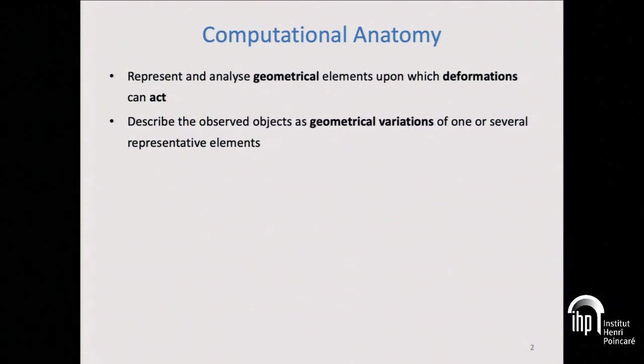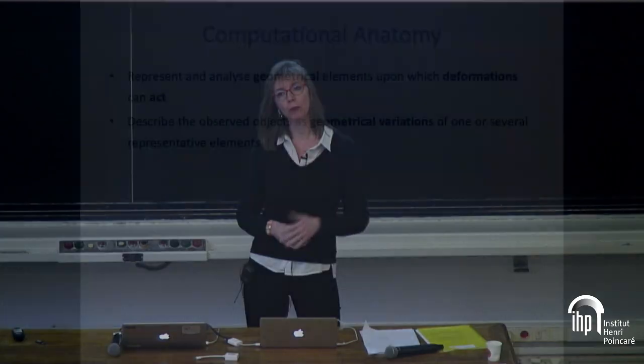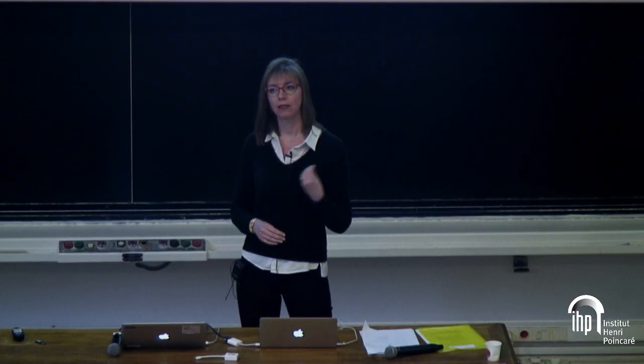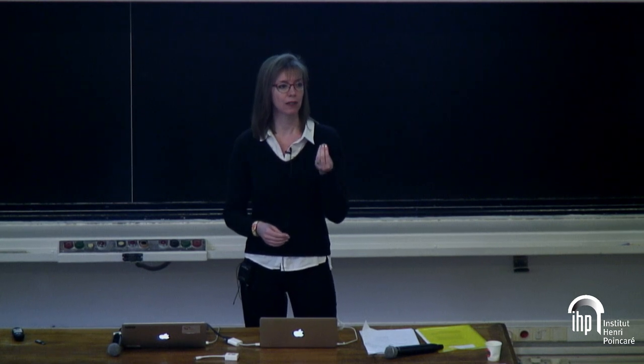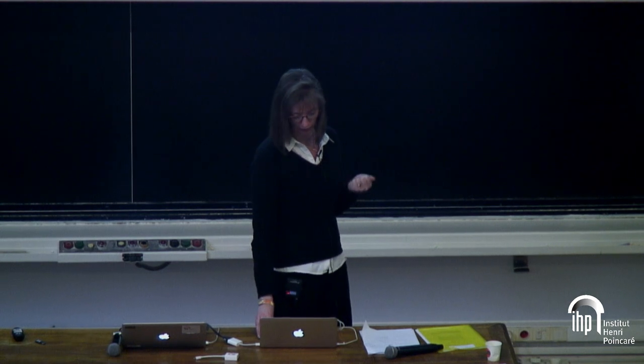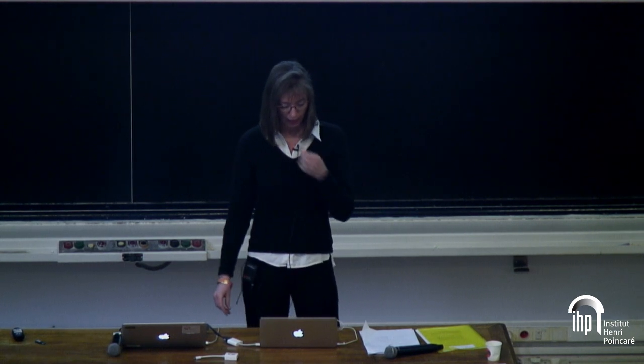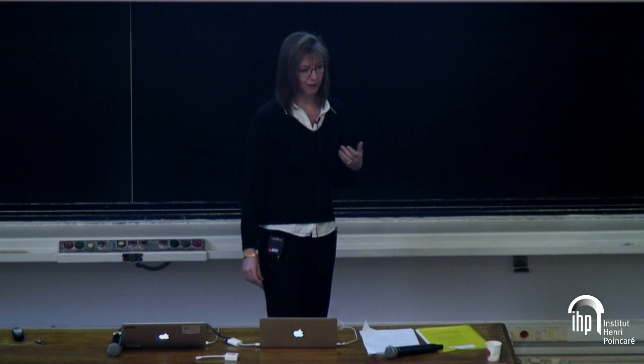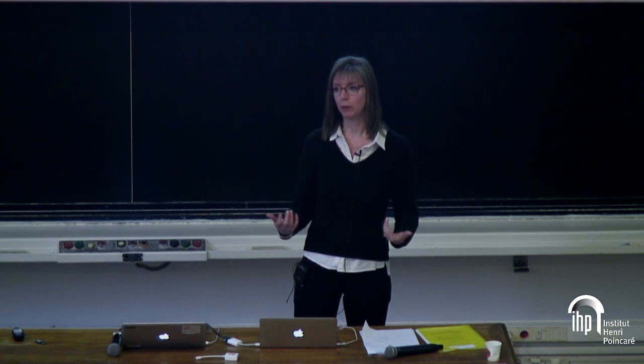We want to understand variation of images, lines, whatever object you have among a population. That geometrical variation will be characterized thanks to representative elements, and that representative element is really crucial. The next step is also to quantify this geometrical variability so that you can separate populations.